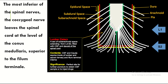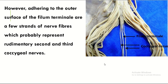The most inferior of the spinal nerves and coccygeal nerves leave the spinal cord at the level of the conus medullaris, superior to the filum terminale. However, adhered to the outer surface of the filum terminale are fused ends of nerve fibers which probably represent rudimentary second and third coccygeal nerves.